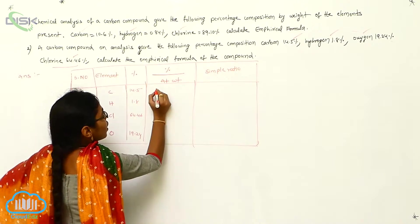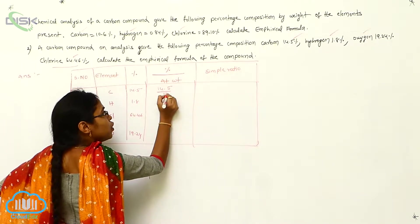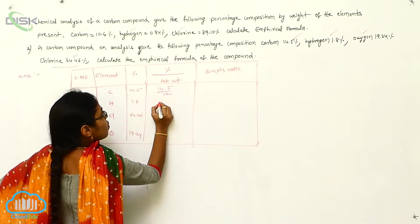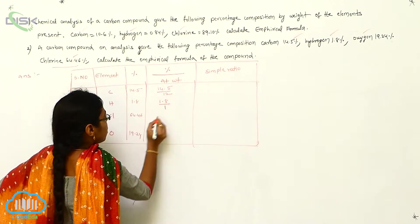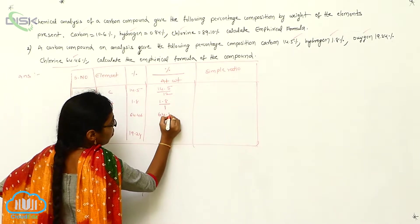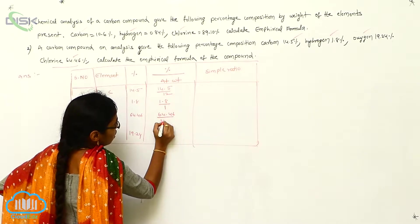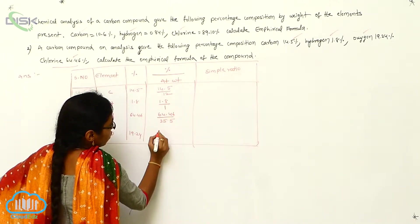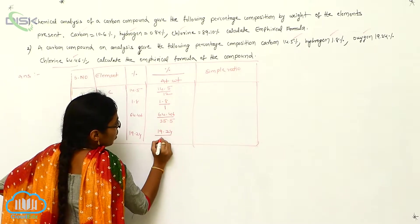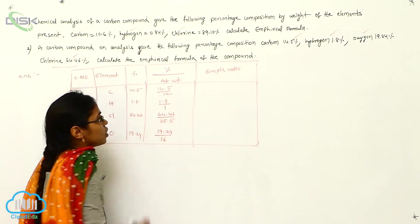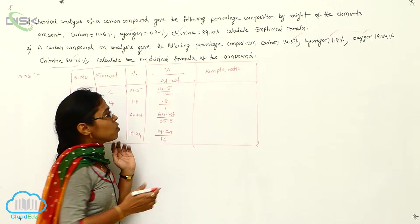From this, you can write: 14.5 divided by 12 for Carbon. For Hydrogen, 1.8 divided by 1. For Chlorine, 64.46 divided by 35.5. And for Oxygen, 19.24 divided by 16. So I am giving the molar ratios.